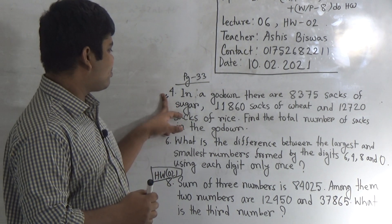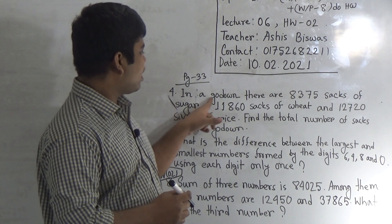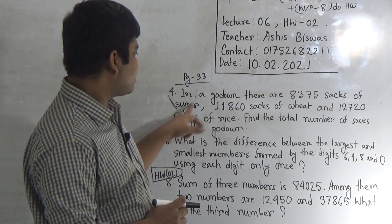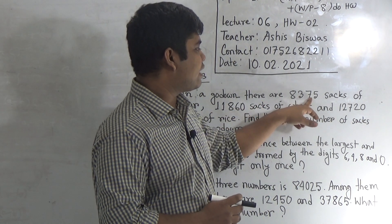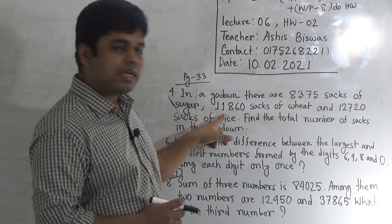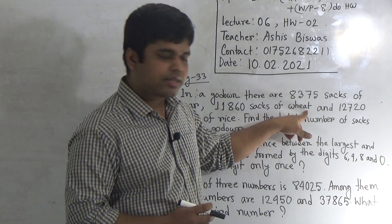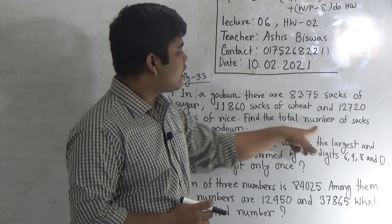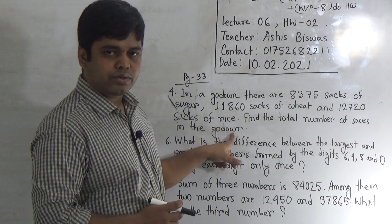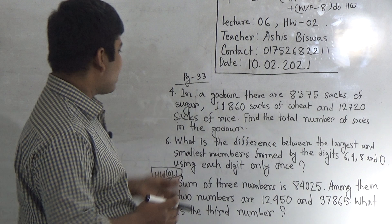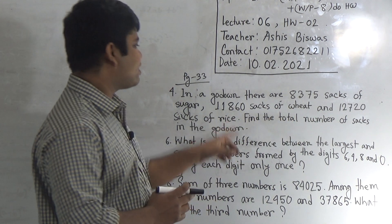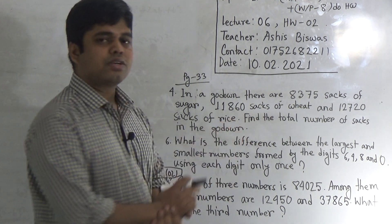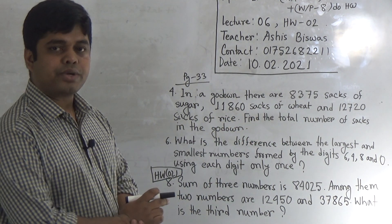At first we do odd problem number 4. In order to do odd problem number 4, first of all we read the question. In a godown, there are 8,375 sacks of sugar and 11,860 sacks of wheat and 12,720 sacks of rice. Find the total number of sacks in the godown. That means, in the godown, the amount of sugar, wheat and rice is given. We need to find out the total amount of sugar, wheat and rice.